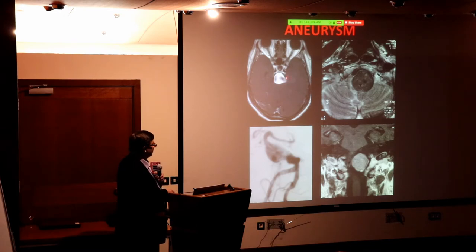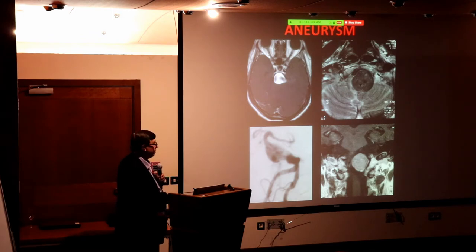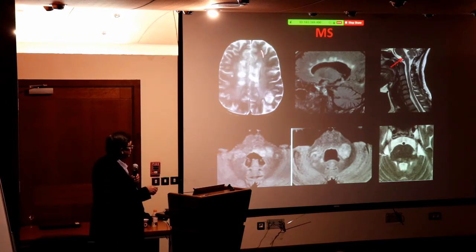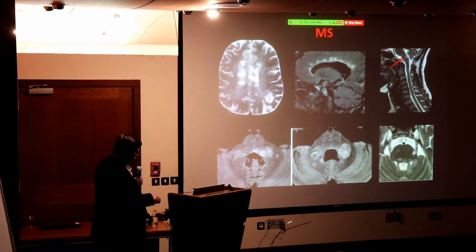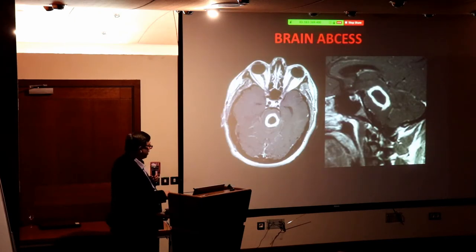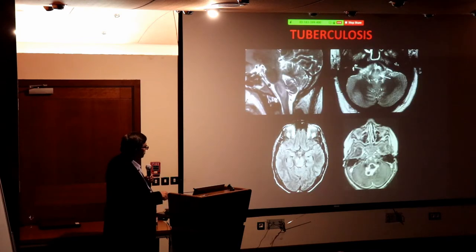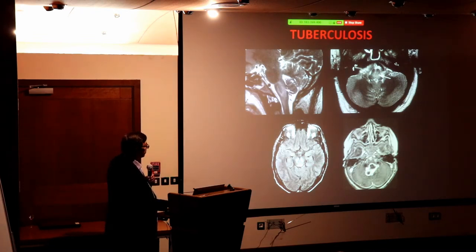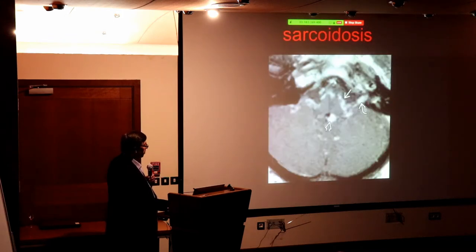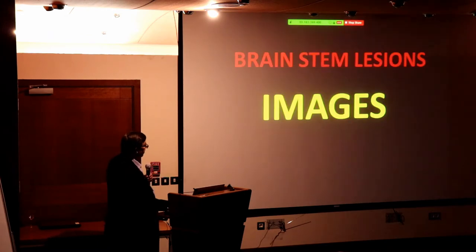An aneurysm can look like a tumor — a viable aneurysm or a thrombosed one. Multiple sclerosis is famous for periventricular lesions in the spinal cord and brain stem, commonly in young females. Brain abscesses and tuberculomas also affect the brain stem — we forget these diseases. Cytokines, sarcoidosis — the pathology of the brain stem is massive.